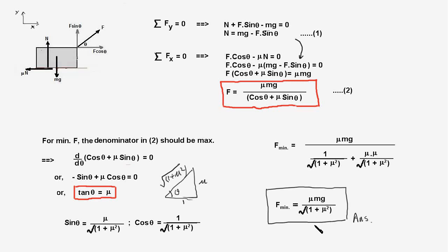Recall that when a horizontal force was applied, the minimum force required was mu mg. We should verify whether the new result is lower. Since mu is a positive quantity, 1 plus mu squared is greater than 1, and root(1 plus mu squared) is also greater than 1. Dividing mu mg by any quantity greater than 1 gives F minimum lower than mu mg. So it is advantageous to apply the force F at an angle theta equal to tan inverse mu rather than keeping it horizontal.